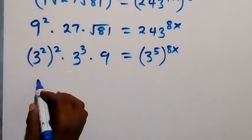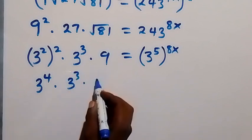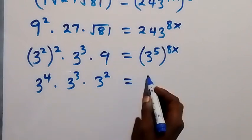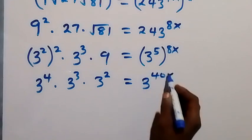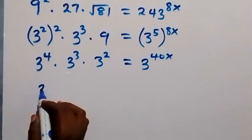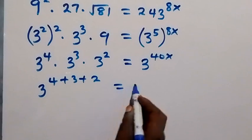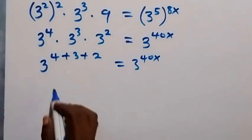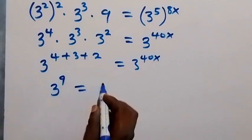This power multiplies here, so we have 3 raised to power 4, times 3 raised to power 3, times 3 raised to power 2 — that gives us 9 — which equals, from here, 3 raised to power 40x. Applying the law of indices on the left side we can combine this as 3 raised to power 4 plus 3 plus 2, which equals 3 raised to power 40x.